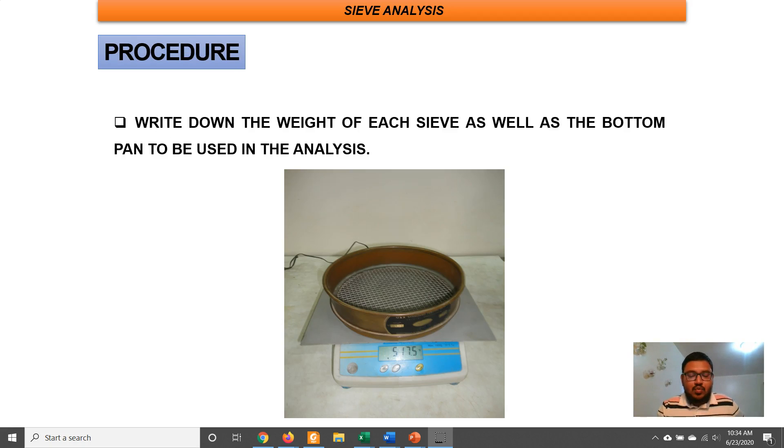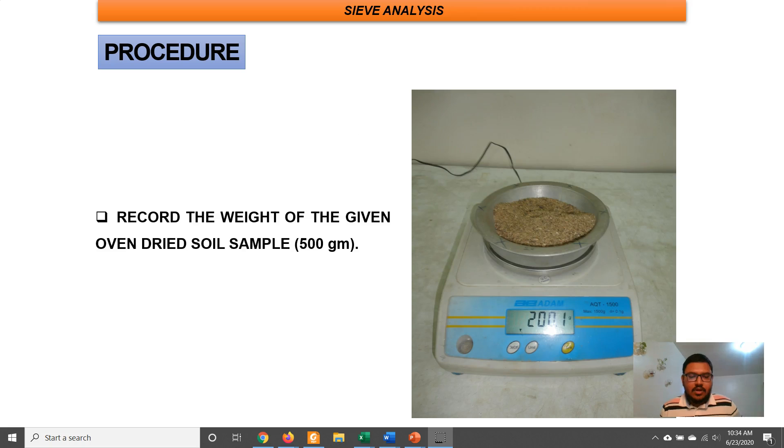At first, we will record the weights of each sieve individually. Then, we will take 500 grams of oven dried soil sample.